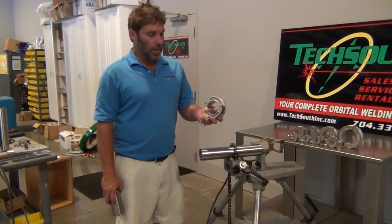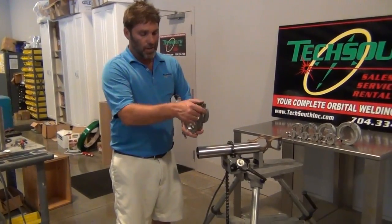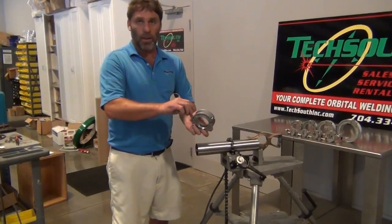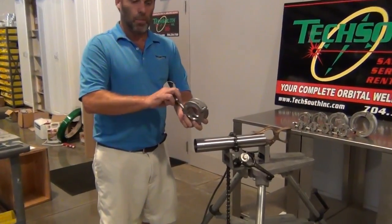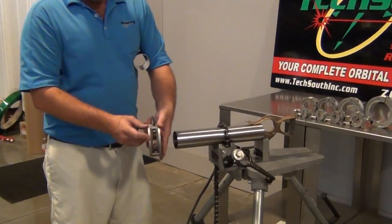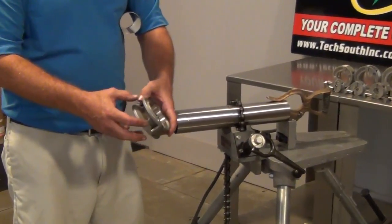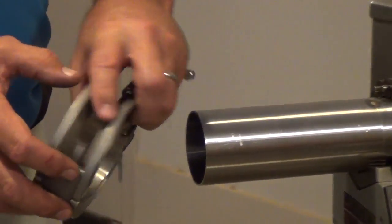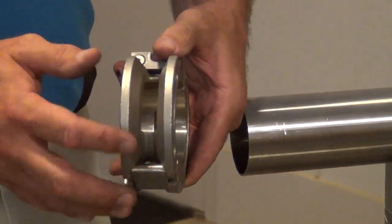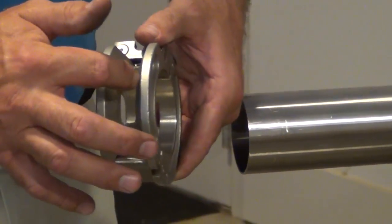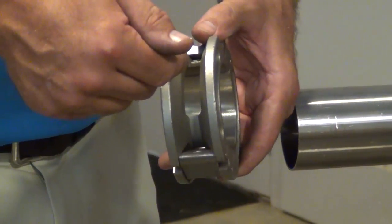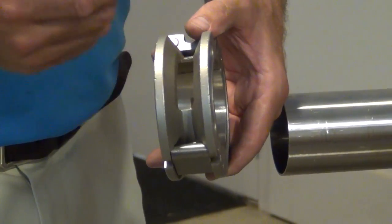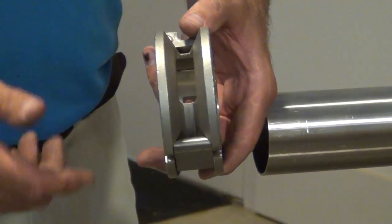They're pretty simple how they work. They hinge so they go right around the pipe. You can lock it down here with your wing nut assembly. You have a window here for tacking and then opposite you have another window for tacking. You also have tapered edges here where you can lay your cup right on the tapered edge, and it makes it easy and keeps you at an equal distance for tacking.